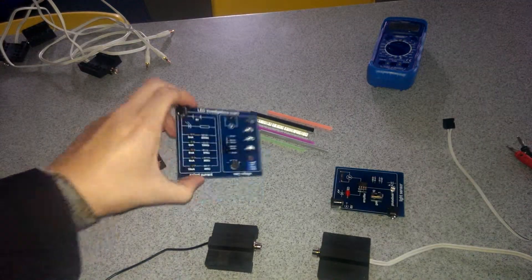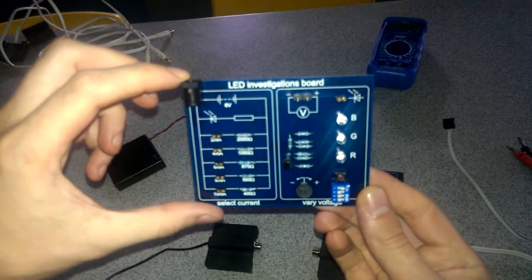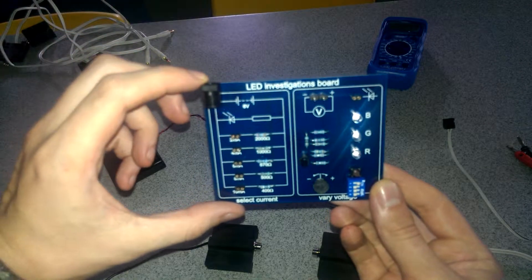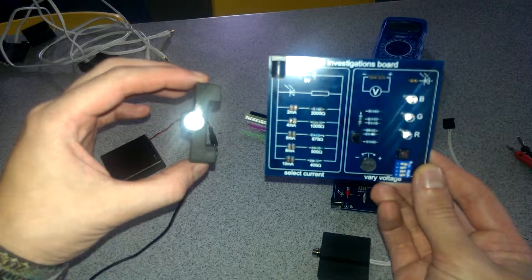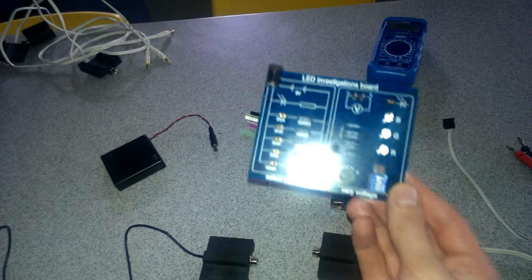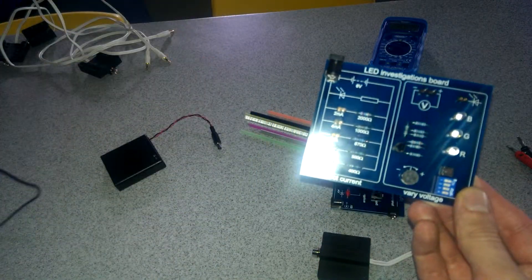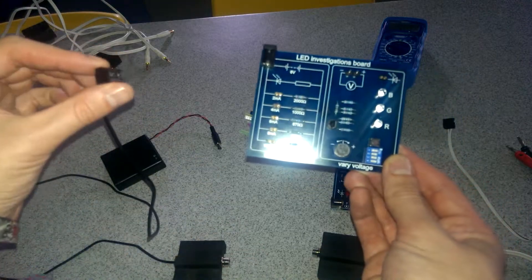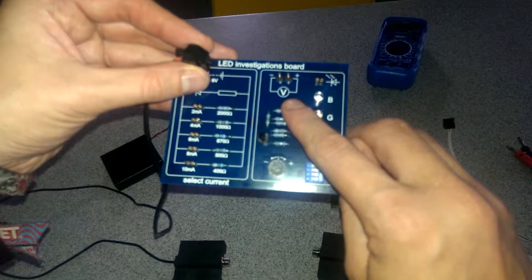So the first thing you need is an LED investigations board. We use this for a number of different things. Today we're going to be using it to supply this LED emitter. Now the first thing we need to do is take the cable from our LED emitter, take the connector and plug it into the LED investigations board where it says V here.